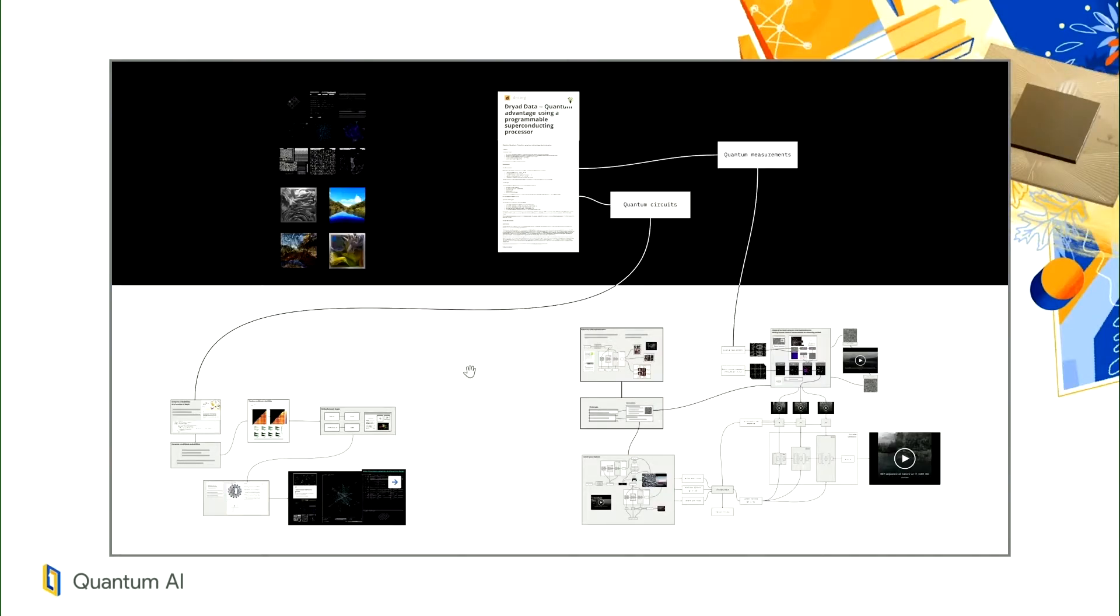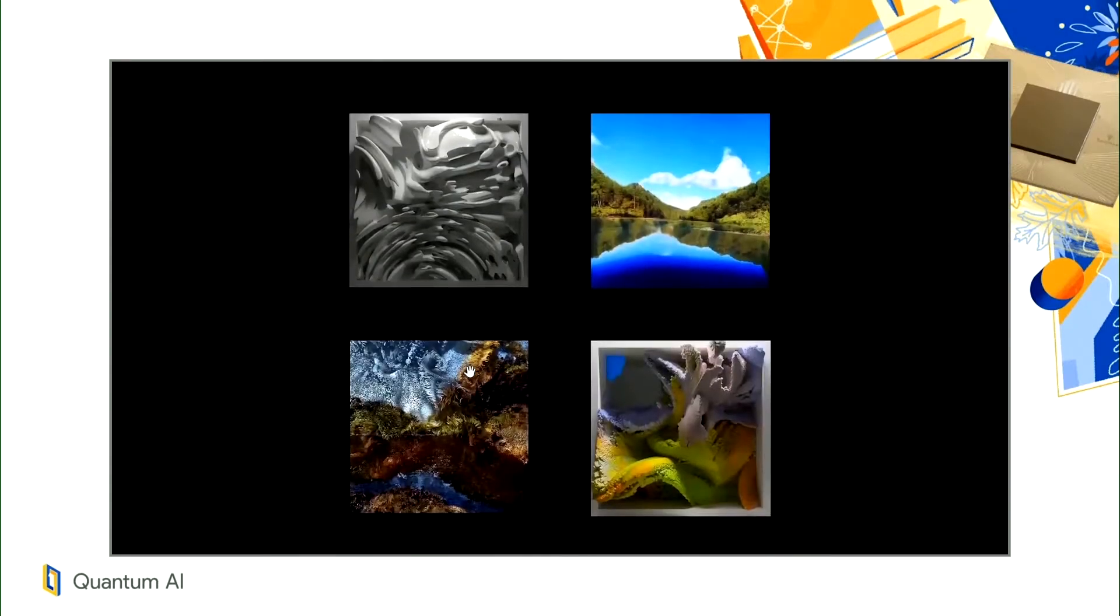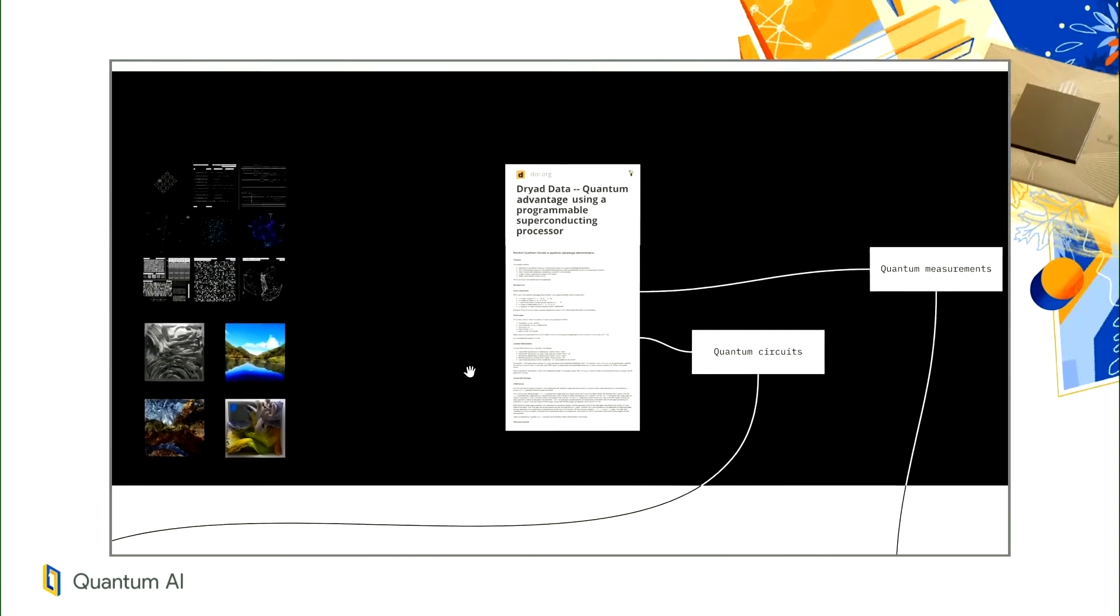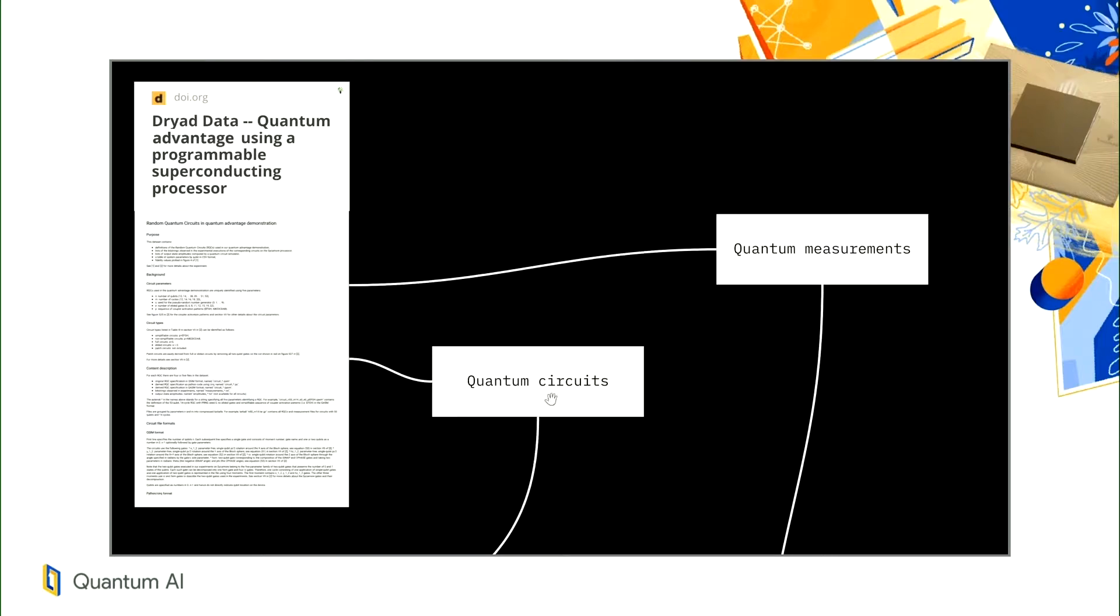Hi, my name is Alex and I do creative research and engineering for the Refik Anadol studio. For quantum memories we wanted a pipeline that celebrates the research and achievements done on quantum advantage using superconducting processors. Thanks to the support of researchers from the Google quantum AI team we developed tools that allow us to generate visuals using the data that was published to support the landmark publication from 2019. From that data we use the quantum circuits on the one hand and the actual measurements that result from running those circuits on Google's Sycamore processor on the other hand.